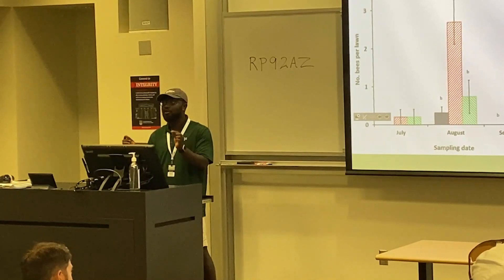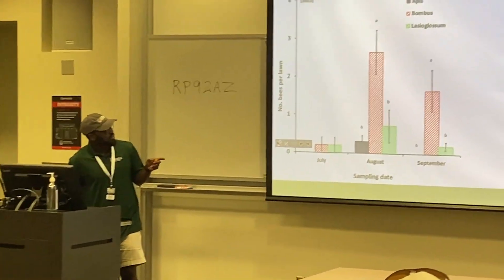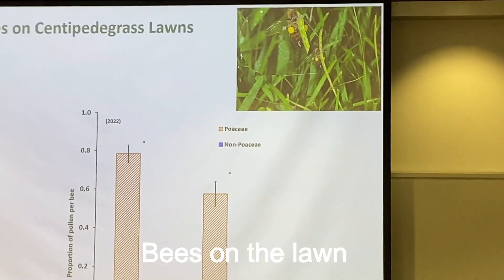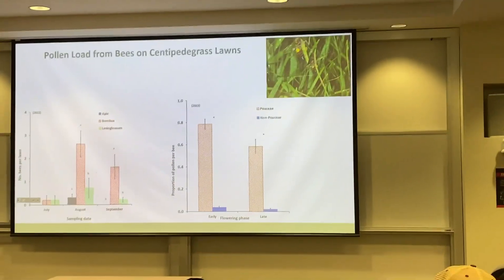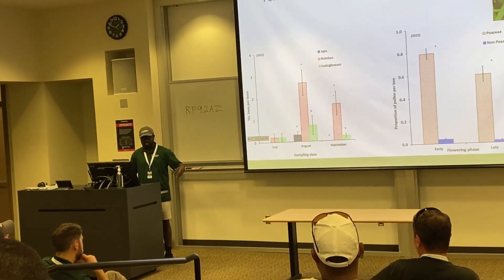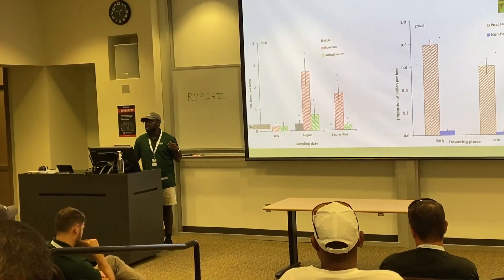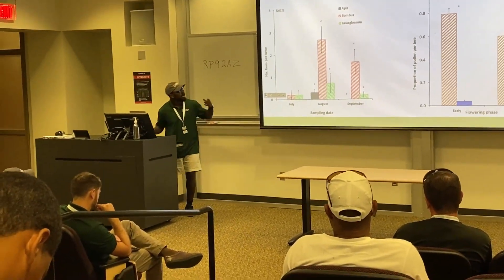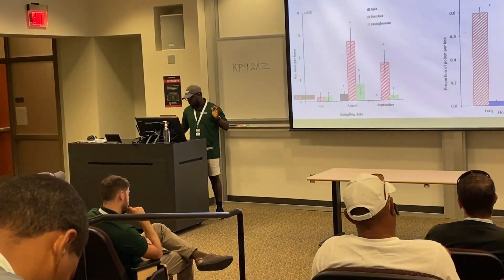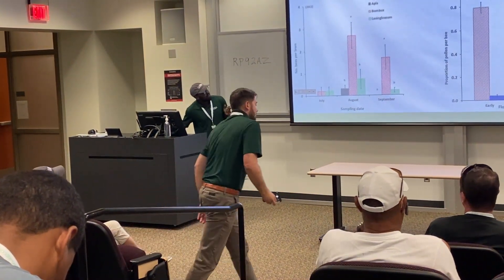We found that while other bee groups were present, we encountered bongo bees more than the other groups. In September, we found that bongo bees were still active and still utilizing this resource. When we looked at the pollen load and compared what we were getting from the Poaceae family — that's the family that centipede grass belongs to — we saw that most of the bees were collecting from Poaceae.